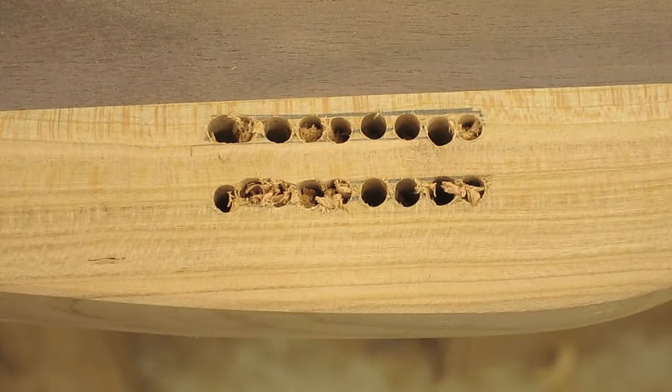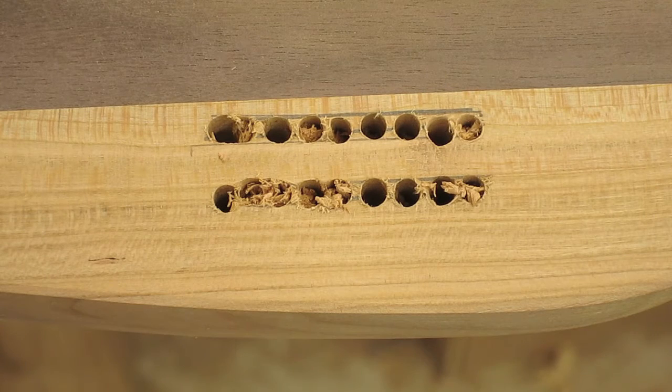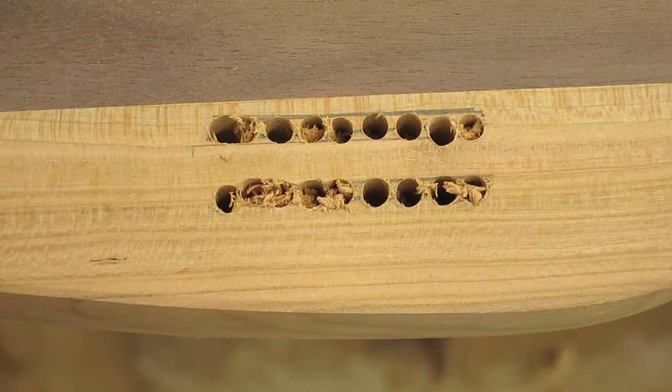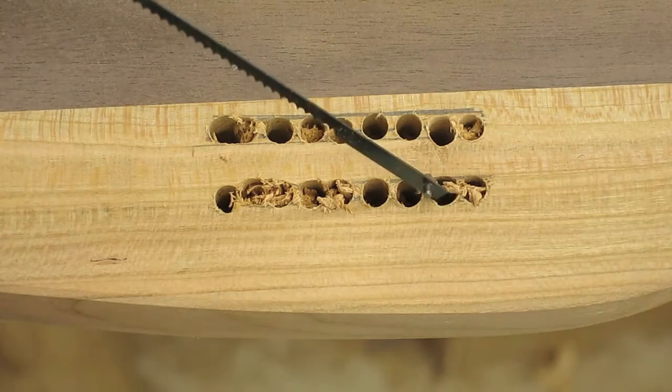So this is the kind of surface that we're left with after leaving the drill press. And in order to make this into a slot, we're going to have to cut with the coping saw.